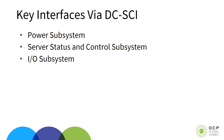The key interfaces via the DCSEI can be broadly classified into three subsystems: the power subsystem, the server status and control subsystem, and the I/O subsystem.